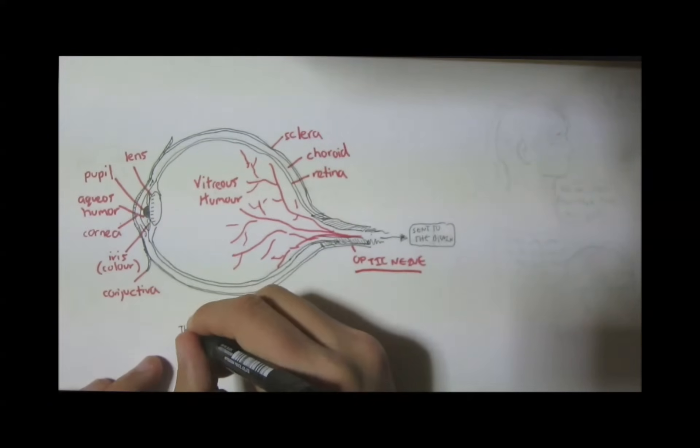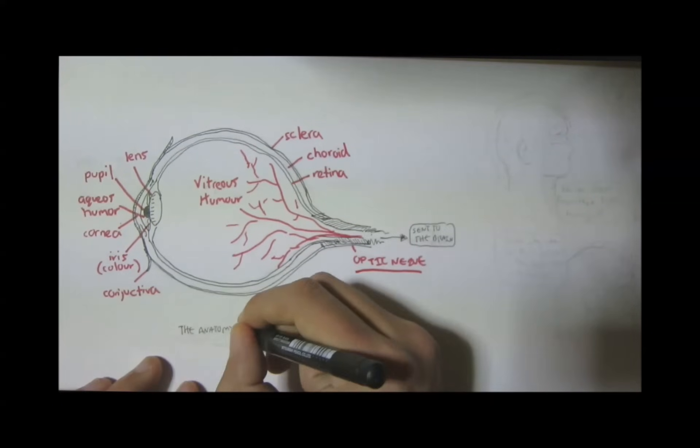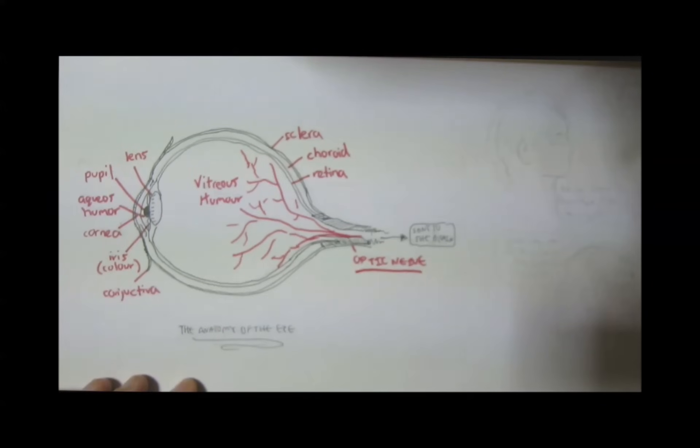So, now that we know the basic anatomy of the eye, let us try to comprehend the physiology of vision and how we see.